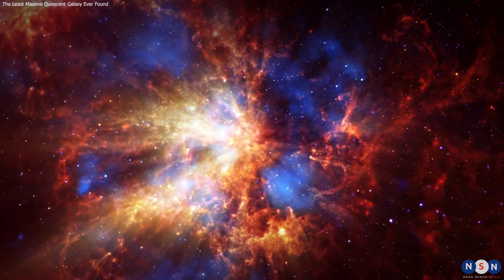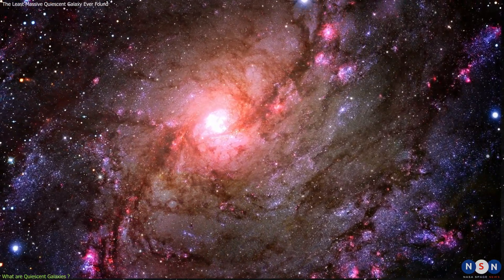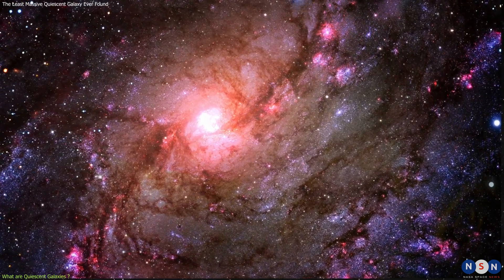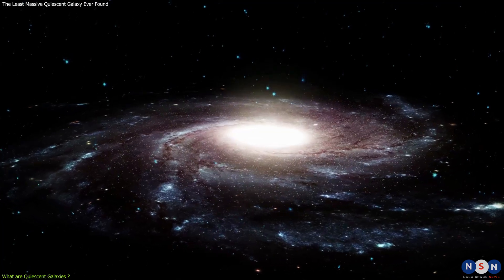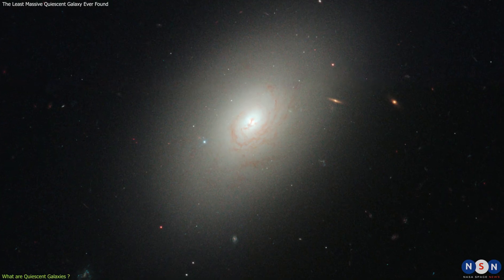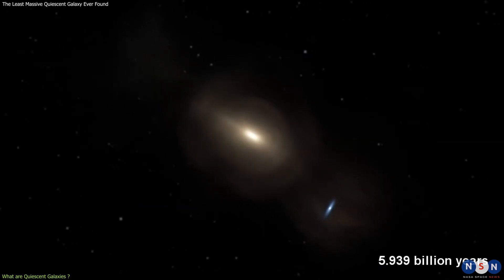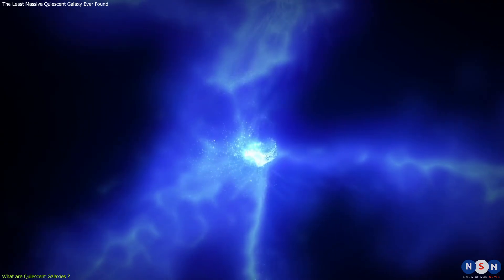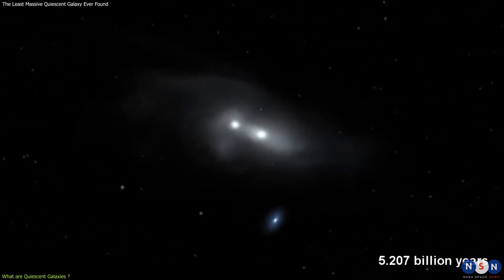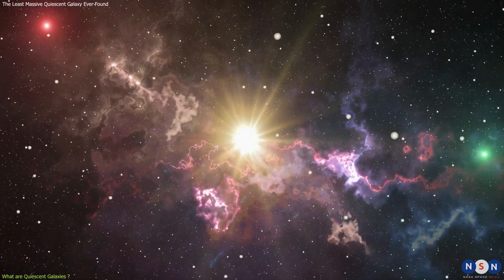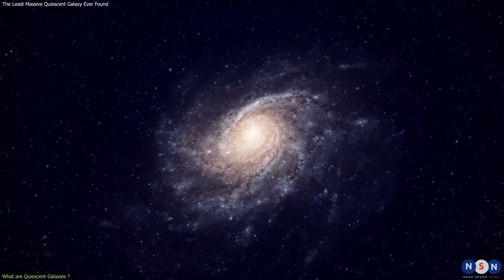Galaxies are the building blocks of the universe. They are huge collections of stars, gas, dust, and dark matter held together by gravity. They come in different shapes and sizes, from spiral galaxies like our own Milky Way to elliptical galaxies that look like giant balls of stars. They are also very dynamic and active. They constantly form new stars from the gas they contain and sometimes collide and merge with other galaxies, creating spectacular fireworks of star formation and destruction.